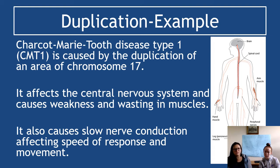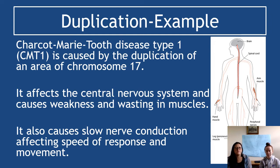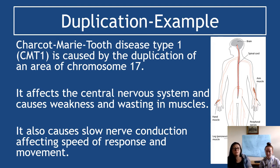Chromosome mutations tend to kill the organism, but some can be severely debilitating rather than immediately fatal. Charcot-Marie-Tooth disease type one is caused by duplication of an area of chromosome 17 — one chromosome has accidentally copied a section of material from its partner. It affects the central nervous system, causes weakness and wasting in muscles, and causes slow nerve conduction. This means physical responses are much slower, although thinking speed remains the same.